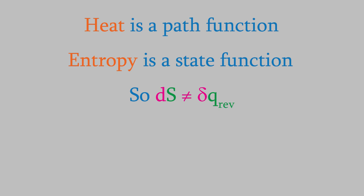However, it turns out that the heat change for a reversible process divided by the temperature is a state function, and that's part of the reason that Gibbs suggested this formula as the definition of entropy.